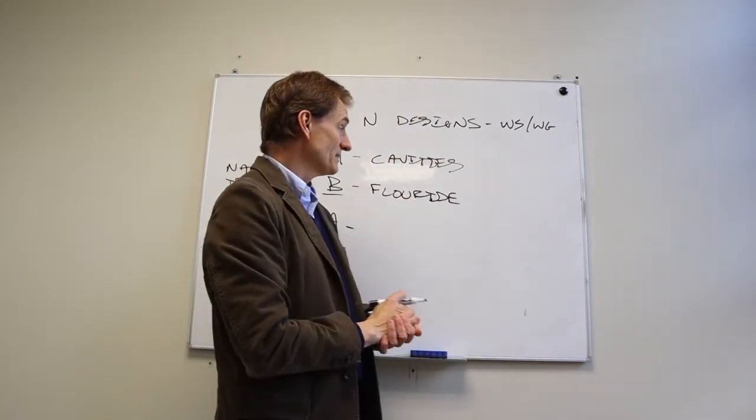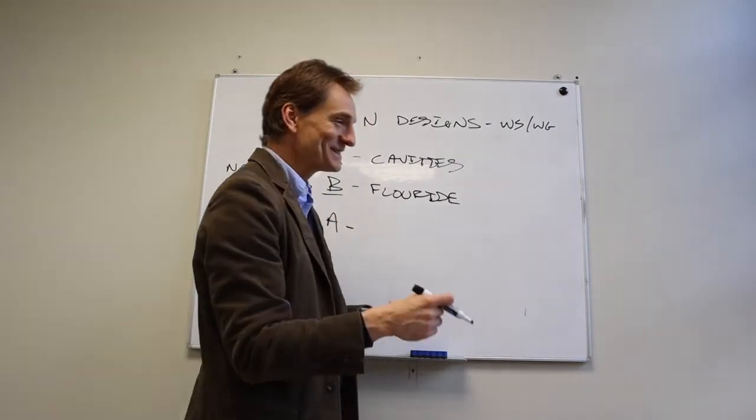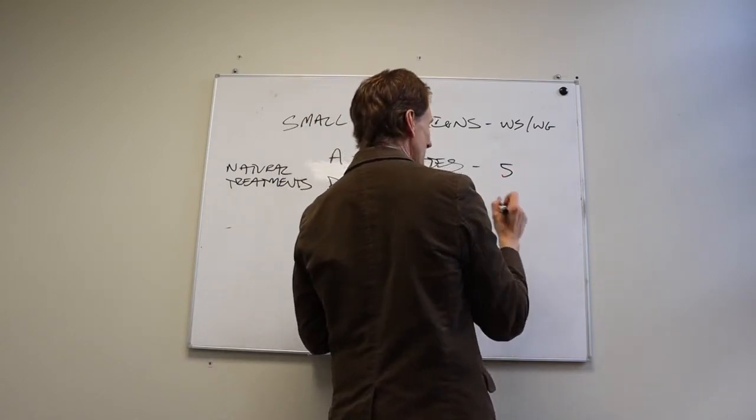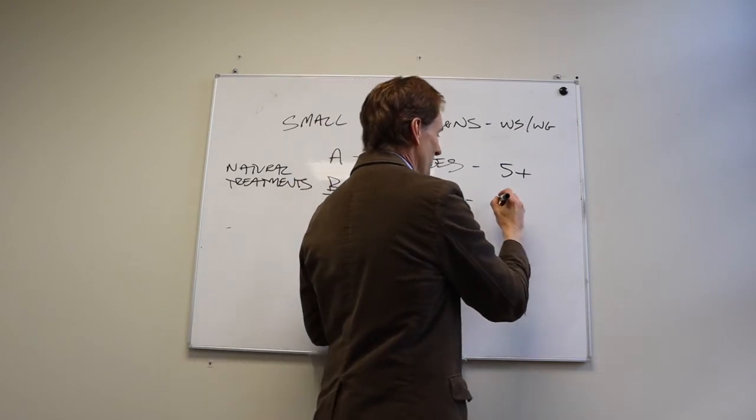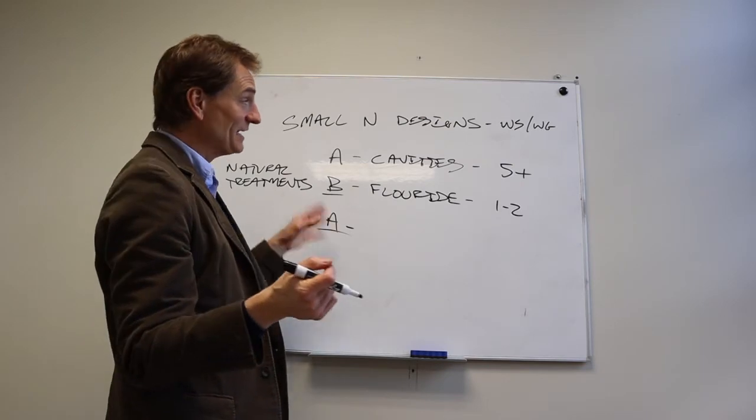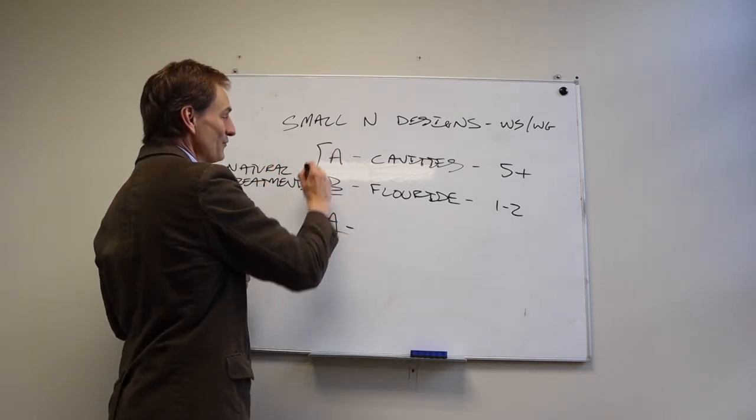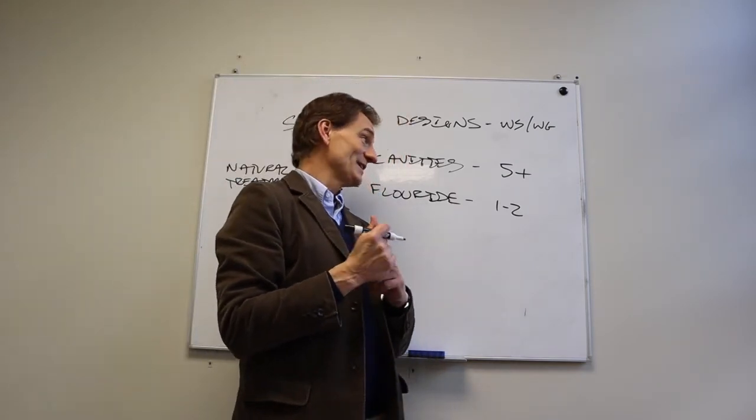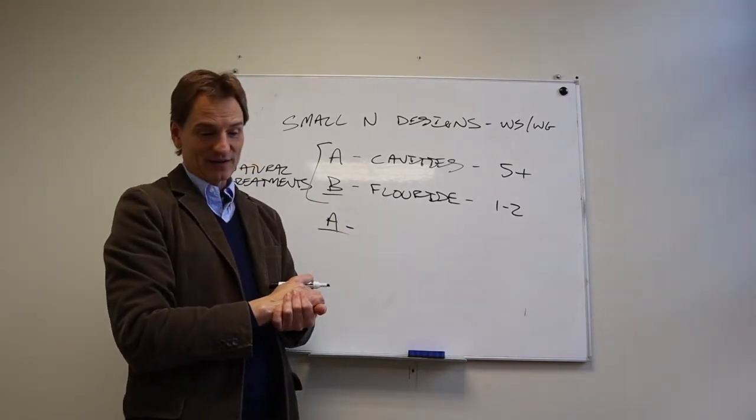And what that did was it massively cut down the number of cavities. So if on average people used to have five cavities or more, fluoride dropped them to one or two. We've never bothered to return to the baseline, because again, it's perhaps unethical to, if we know that fluoride works in terms of tooth decay and preventing it, then why would you ever go back to a time before that?